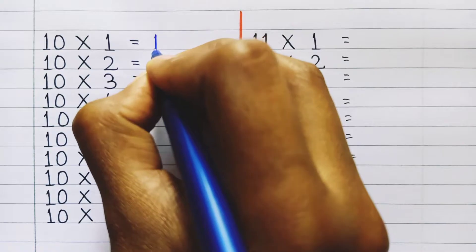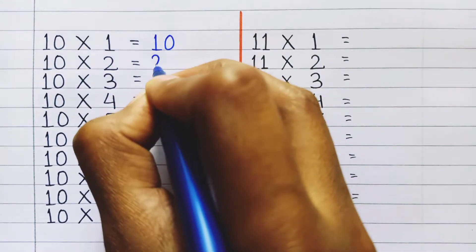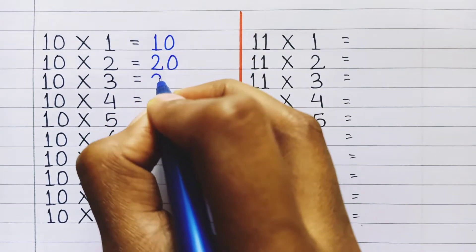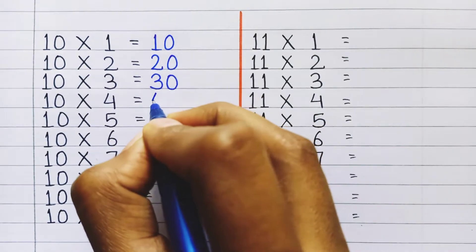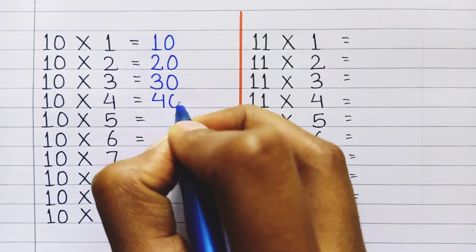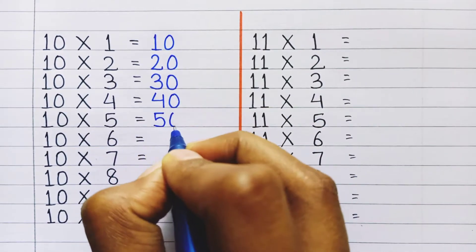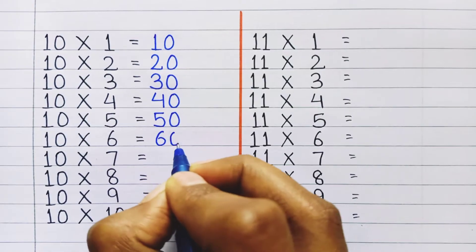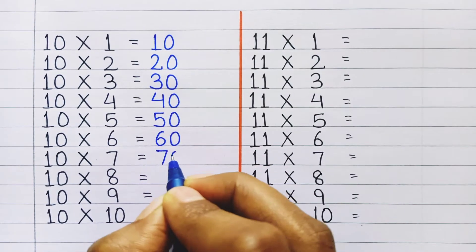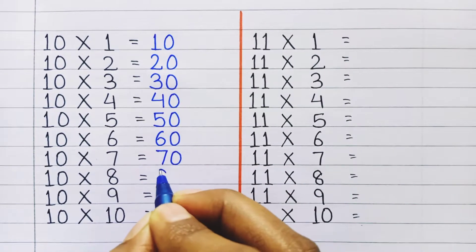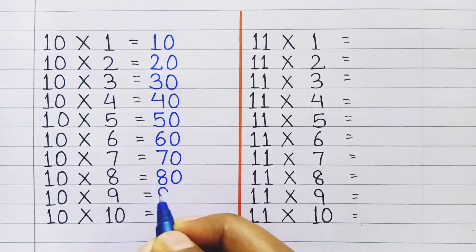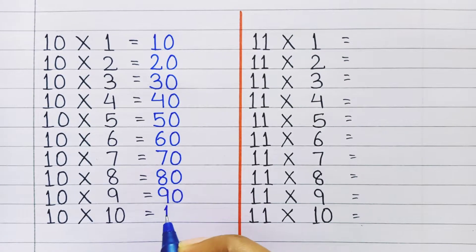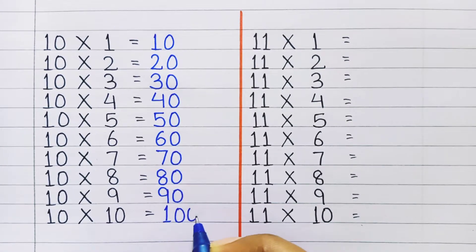Table of 10: 10 one's a 10, 10 two's a 20, 10 three's a 30, 10 four's a 40, 10 five's a 50, 10 six's a 60, 10 seven's a 70, 10 eight's a 80, 10 nine's a 90, 10 ten's a 100.